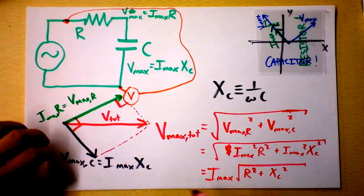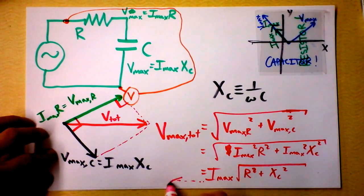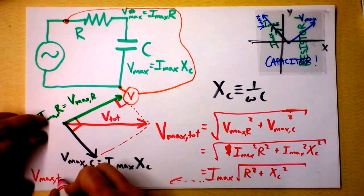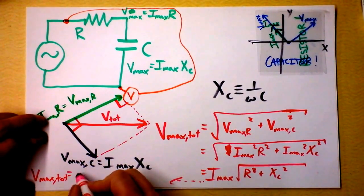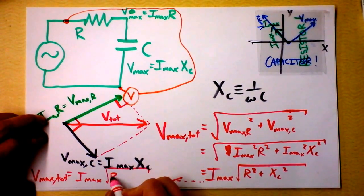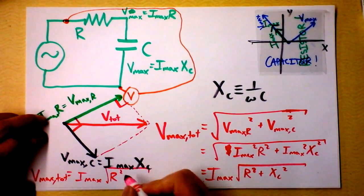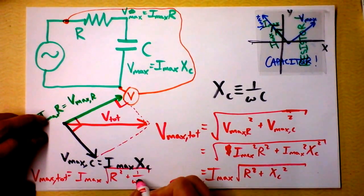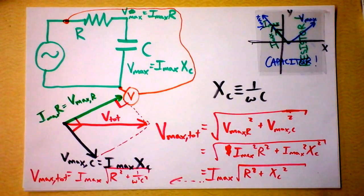And I'll remind you, we can go dot dot dot over here. This Vmax total then is also Imax times the square root of, I'm just going to plug in what X sub C is. That's R squared plus 1 over omega squared C squared.